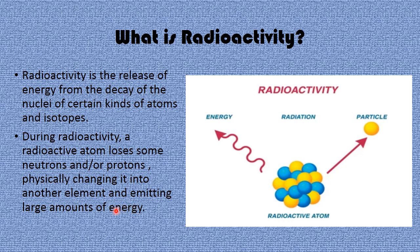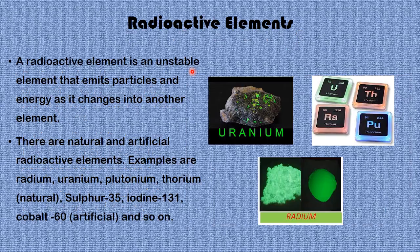During radioactivity, a radioactive atom loses some neutrons and/or protons, physically changing it into another element and emitting large amounts of energy. As you can see, this is a pictorial representation of radioactivity — we have an unstable nucleus, radiation is released from it, and either particles or energy are emitted. That is radioactivity in a nutshell.